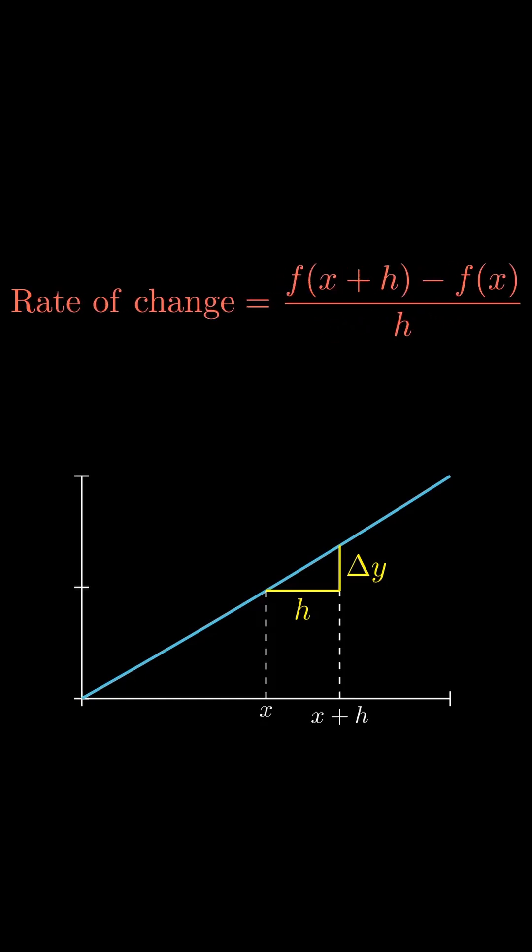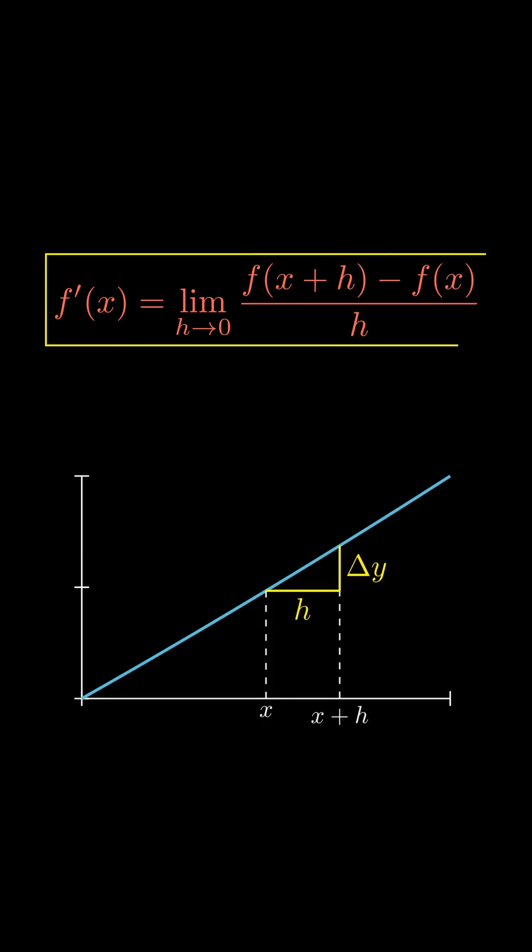Simplifying gives us this. And to capture what happens as h approaches zero, we use a limit. This is the definition of derivative, how you calculate the slope at a certain point of a certain function.